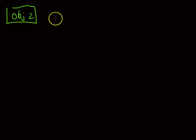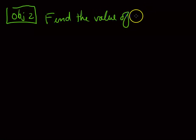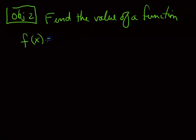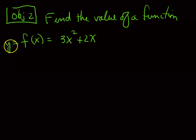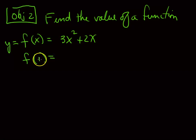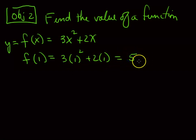Objective two: find the value of a function. If f(x) = 3x² + 2x, then to find f(1), substitute 1 for x: 3(1)² + 2(1) = 3 + 2 = 5. This gives us the ordered pair (1, 5). Whatever is inside the parentheses in function notation is what you substitute for x.